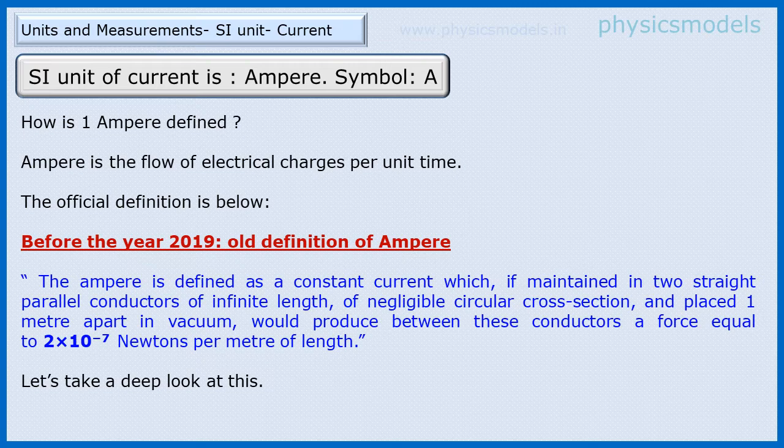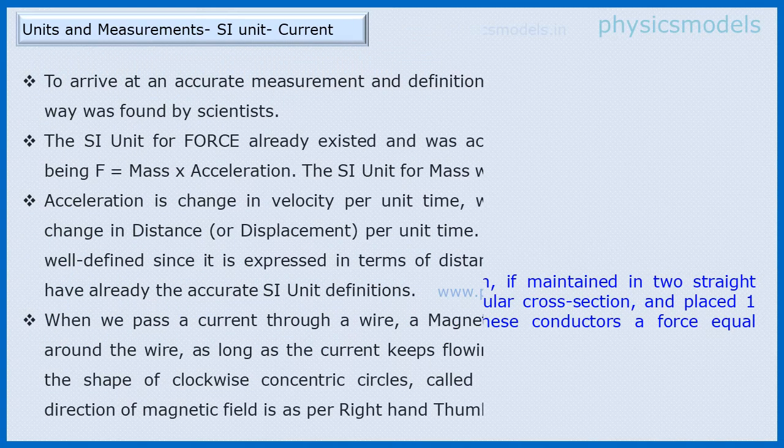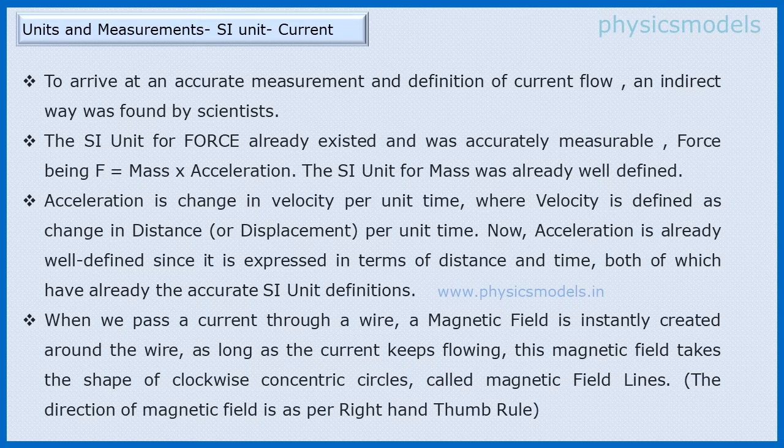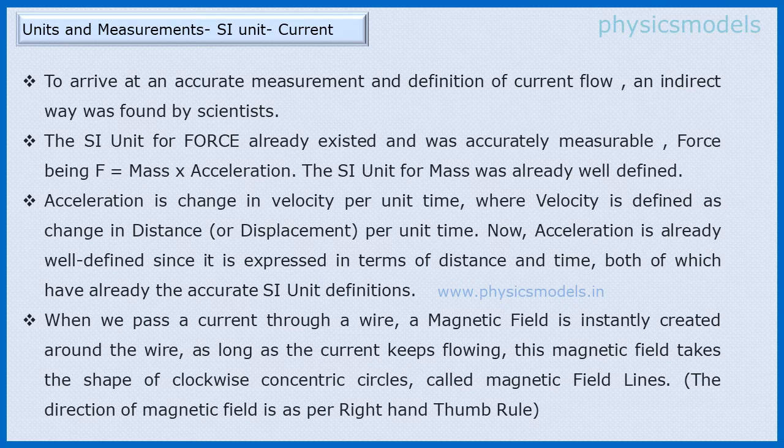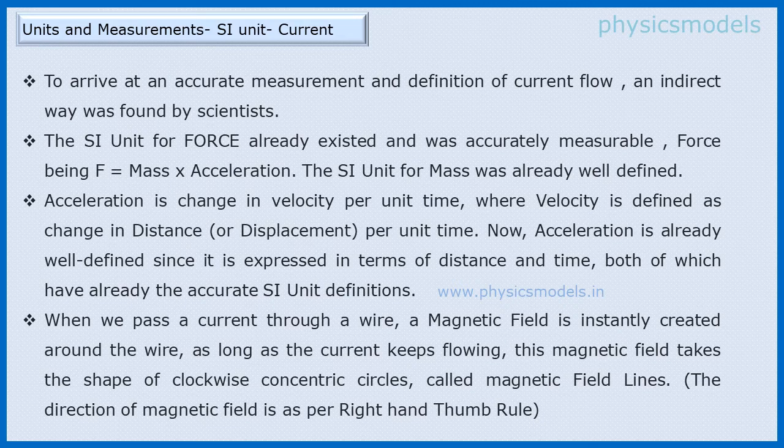The next step is to understand force between the two parallel wires. Force as a SI unit existed at that time - force was mass times acceleration. There was a SI unit for mass, acceleration was defined as velocity per unit time, velocity was distance per unit time, so distance and time both had been well defined, so there was no problem of SI unit coming to the principle of force between the wires.